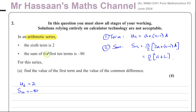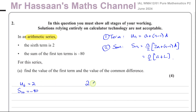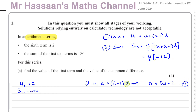From the first piece of information we can form an equation. U6 equals 2, so: 2 equals a plus (6 minus 1) times d, which gives us a plus 5d equals 2. That's our first equation.